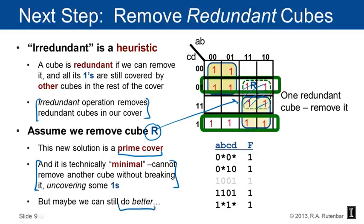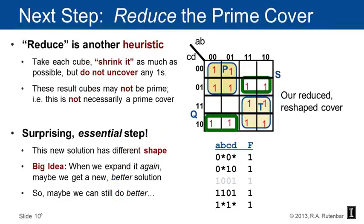After removing cube r, the new solution is still a prime cover and is technically minimal — meaning we cannot remove another cube without uncovering some ones. This is a local minimum. However, we might still be able to do better. The next step is reduce — another heuristic where we take each cube and shrink it as much as possible without uncovering any ones and without breaking the function.